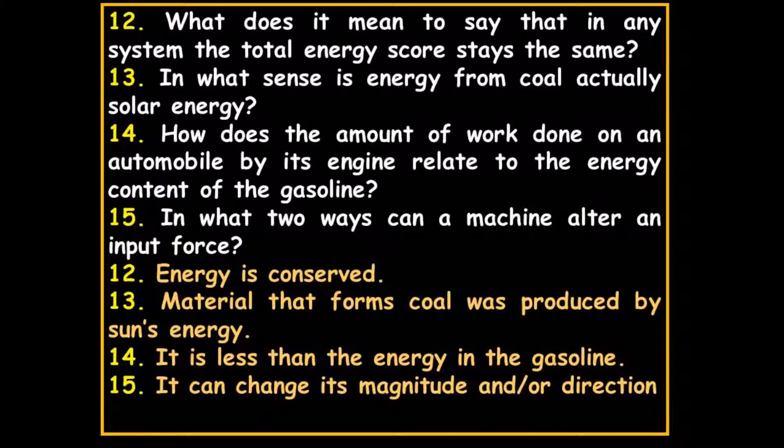How does the work done on an automobile by its engine relate to the energy content of the gasoline? It is less than the energy in the gasoline because so much is wasted — combustion engines are very inefficient. In what two ways can a machine alter input energy? It can change its magnitude and/or direction.